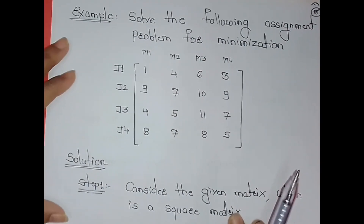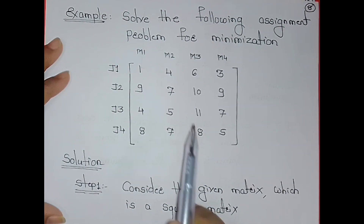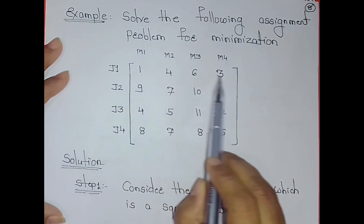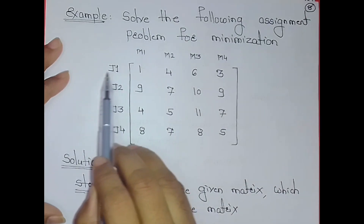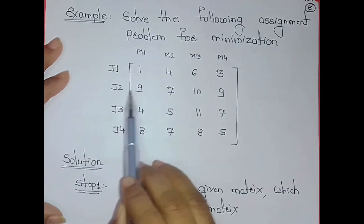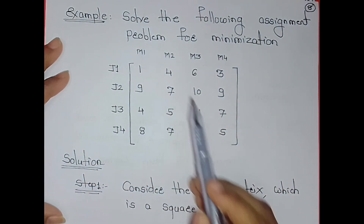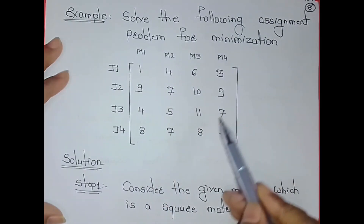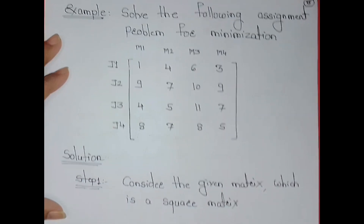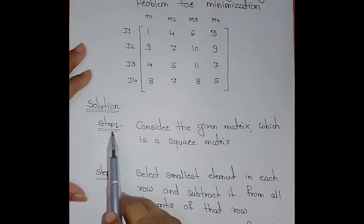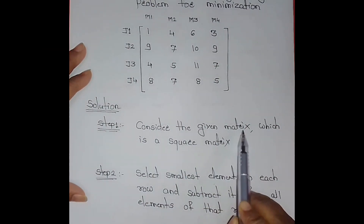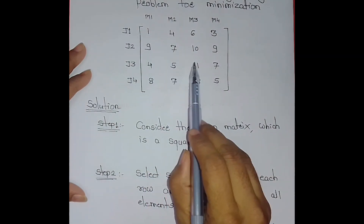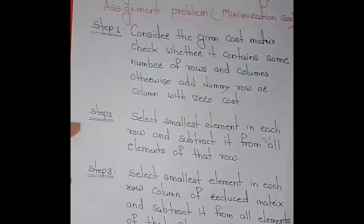First, check what is the given matrix — is it a square matrix? We check the total number of rows: 1, 2, 3, 4. And the total number of columns: 4. So the given matrix is a square matrix because the total number of rows is equal to the total number of columns.